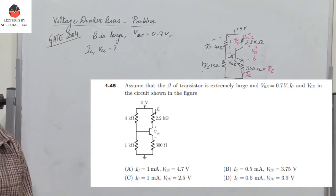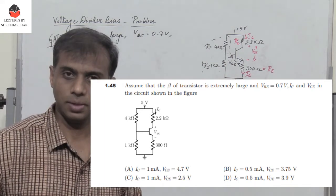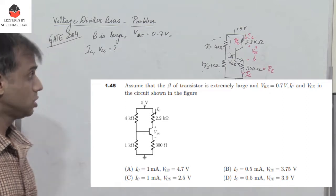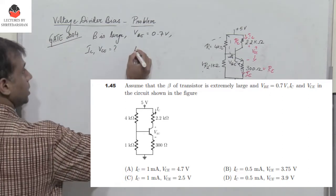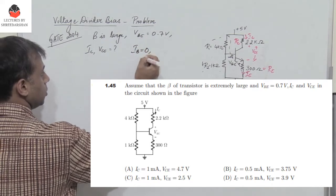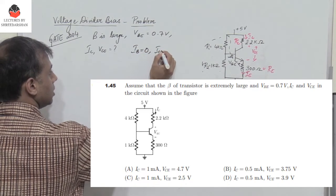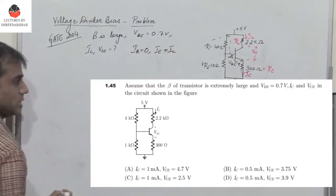It has been mentioned that beta is very large. Since beta is not given, we have to assume that Ib is 0. Therefore, we assume that Ib, the base current, is 0, and hence the emitter current becomes approximately equal to Ic.